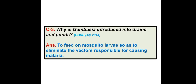Why is Gambusia introduced into drains and ponds? Gambusia is a fish. It is introduced into drains and ponds to feed on mosquito larvae, so as to eliminate the vectors responsible for causing malaria.